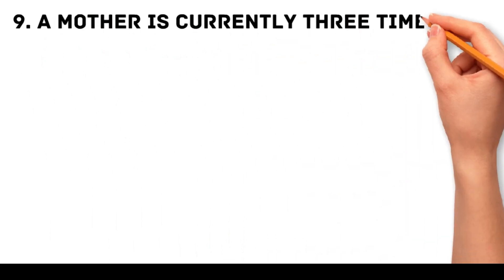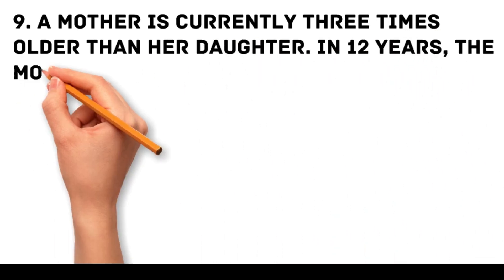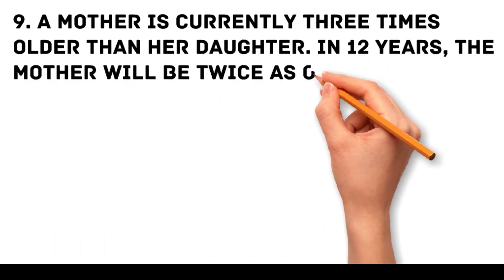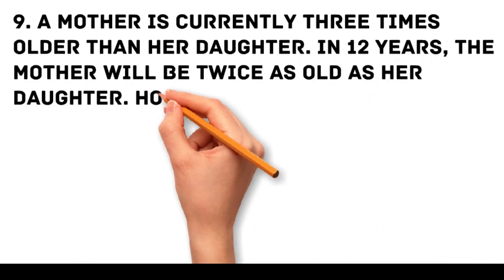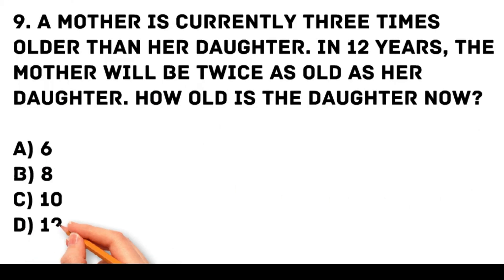Problem 9. A mother is currently 3 times older than her daughter. In 12 years, the mother will be twice as old as her daughter. How old is the daughter now? A. 6, B. 8, C. 10, D. 12.